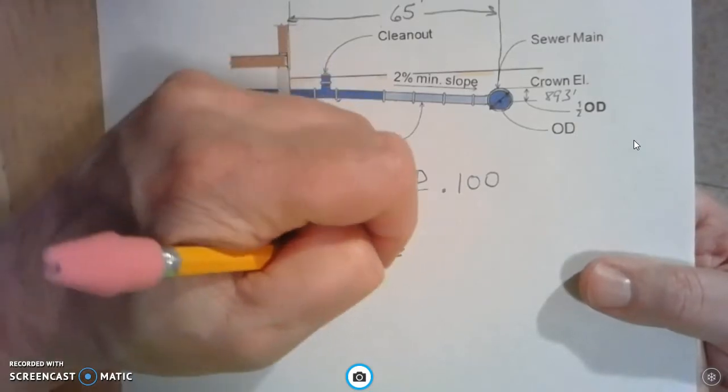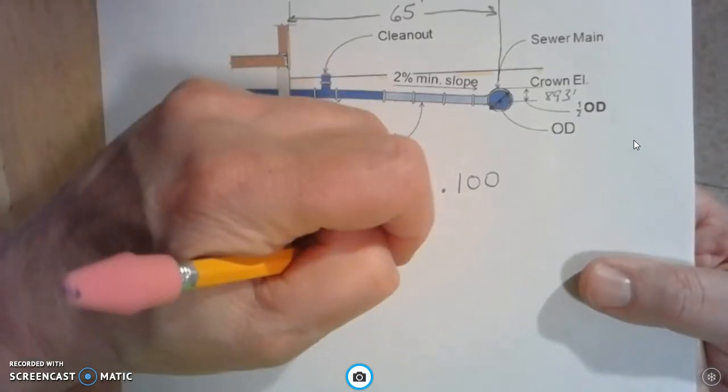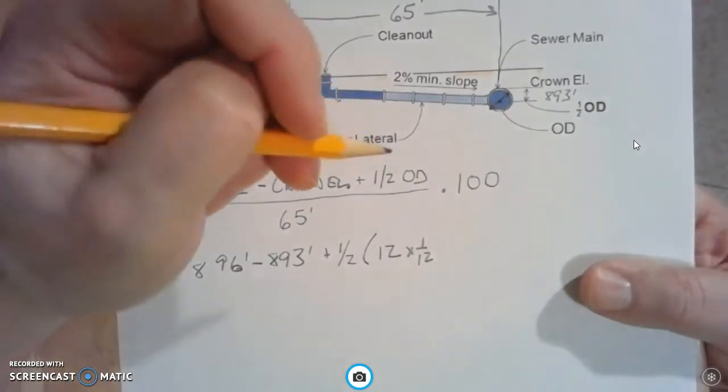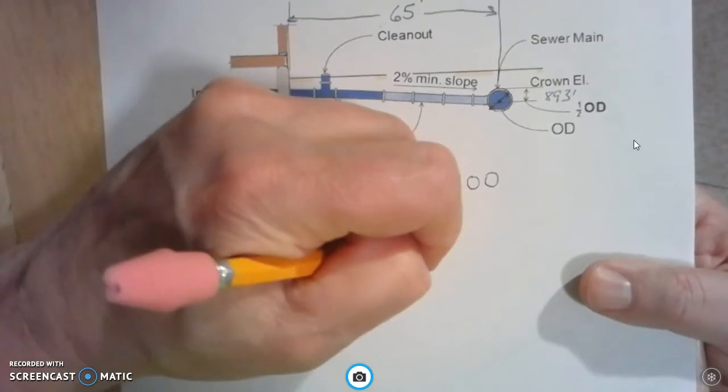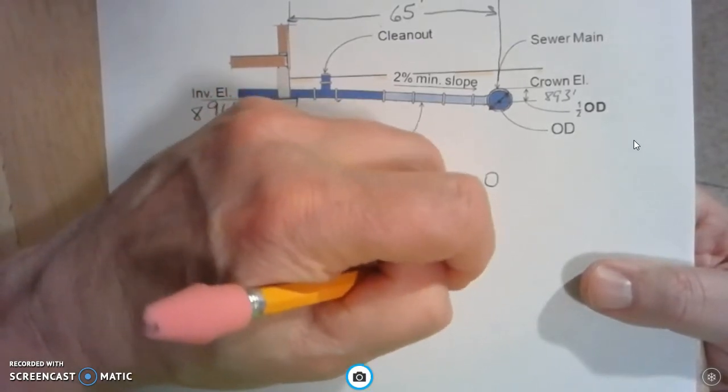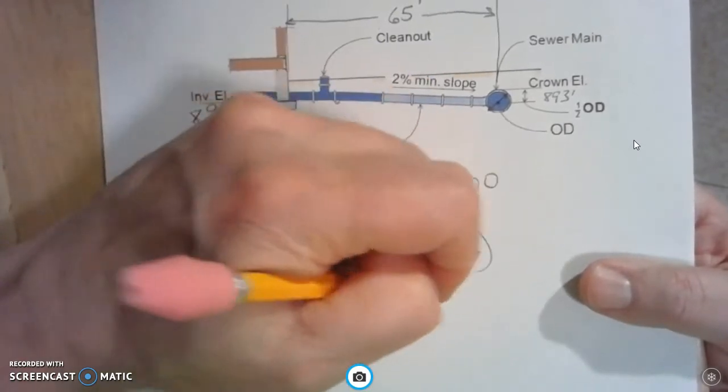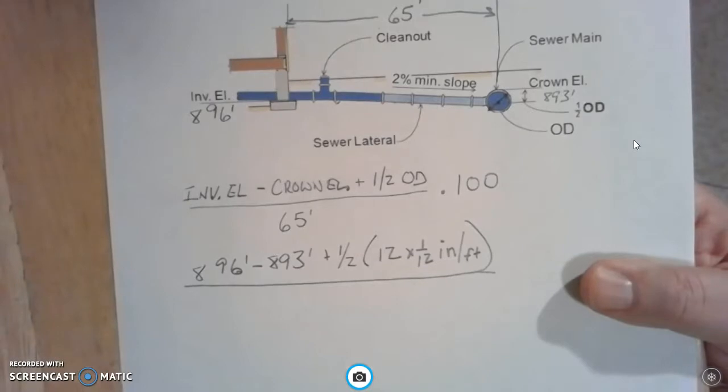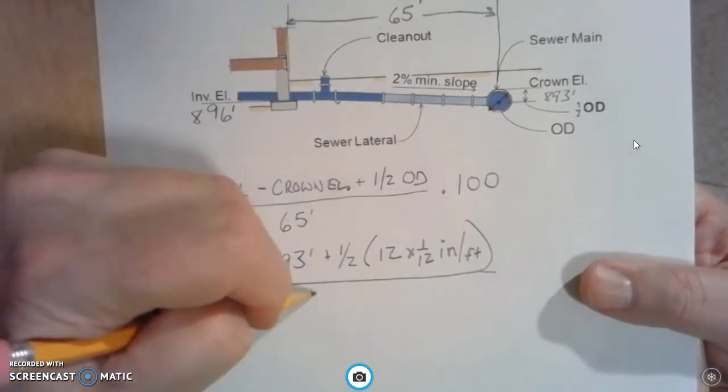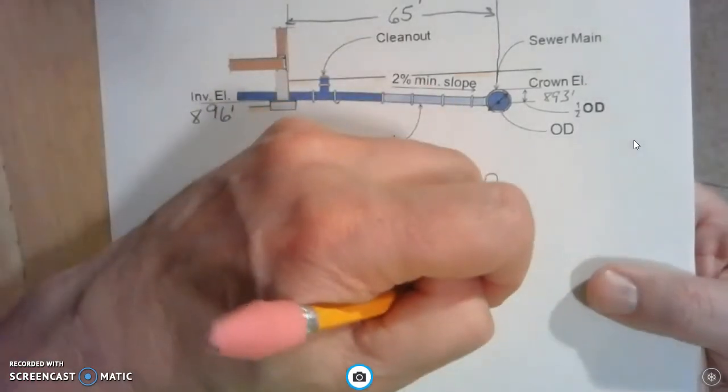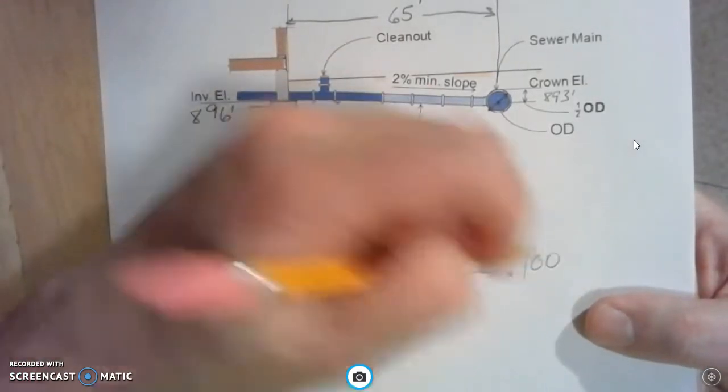Times this is going to be 1 over 12, 12 inches per feet, close parentheses, and draw the line there. Now we're going to bring down our 65 feet for our distance and multiply that times 100.